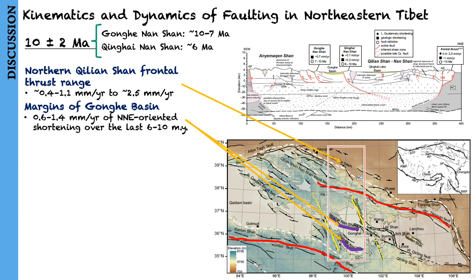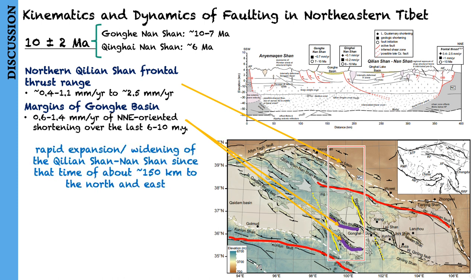The similarity in both timing and rate of deformation, and the opposing vergence of faults on either flank of the Qilian Shan, suggests relatively rapid outward widening of the Qilian Shan by around 150 km to the north and east since that time. They provide two possible explanations proposed from previous studies.